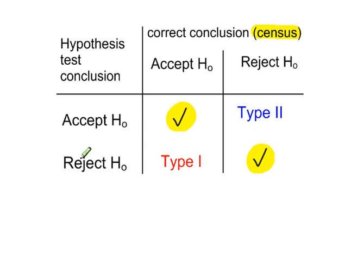If the hypothesis test says we should reject H0 and the conclusion from the census is to accept H0, the wrong conclusion has been reached here. This is called a Type I error. So we are rejecting H0 from the hypothesis test, it's the wrong conclusion, what we should have done is to have accepted H0. If our test conclusion is to accept H0 and the census is saying that we should have rejected H0, this is called a Type II error.